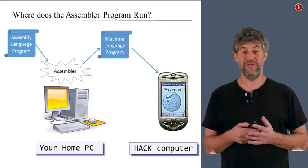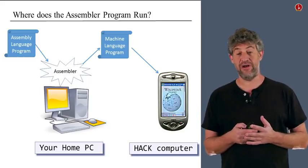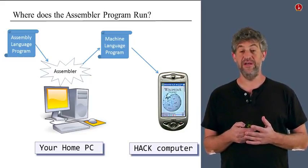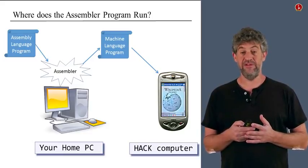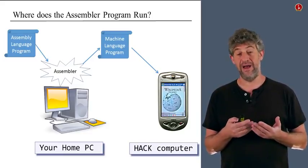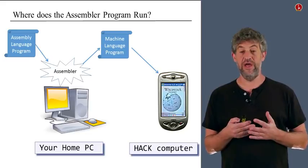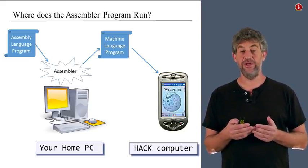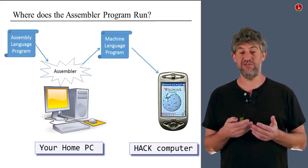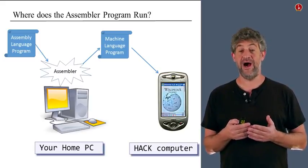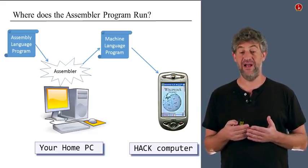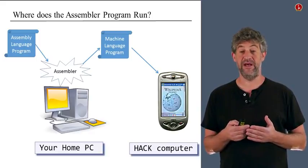The assembler will be a software program that runs on your computer. What it produces — the machine language it produces — is machine language for the Hack computer, a different computer on which you will actually run the produced program. This is sometimes called a cross-compiler: it runs on one computer and produces code intended for another. This way, we don't have the bootstrap problem of having to write our assembler in machine code.